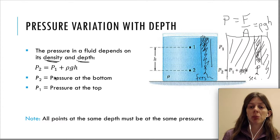P2, which is the pressure at the bottom of our fluid, is equal to P1, the pressure at the top, plus rho g h.